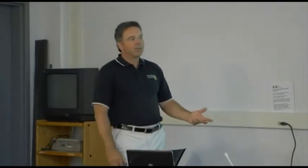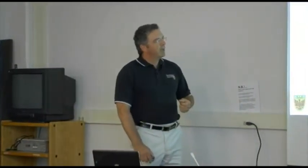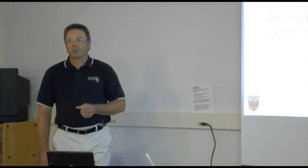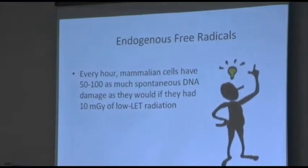Every hour, mammalian cells have about 50 to 100 times more spontaneous DNA damage than if they're exposed to a dose of what we call 10 milligray. A 10 milligray is a low dose of radiation, and as you'll see, 10 milligray is the dose that you would get if you got exposed to a CAT scan or a CT scan.